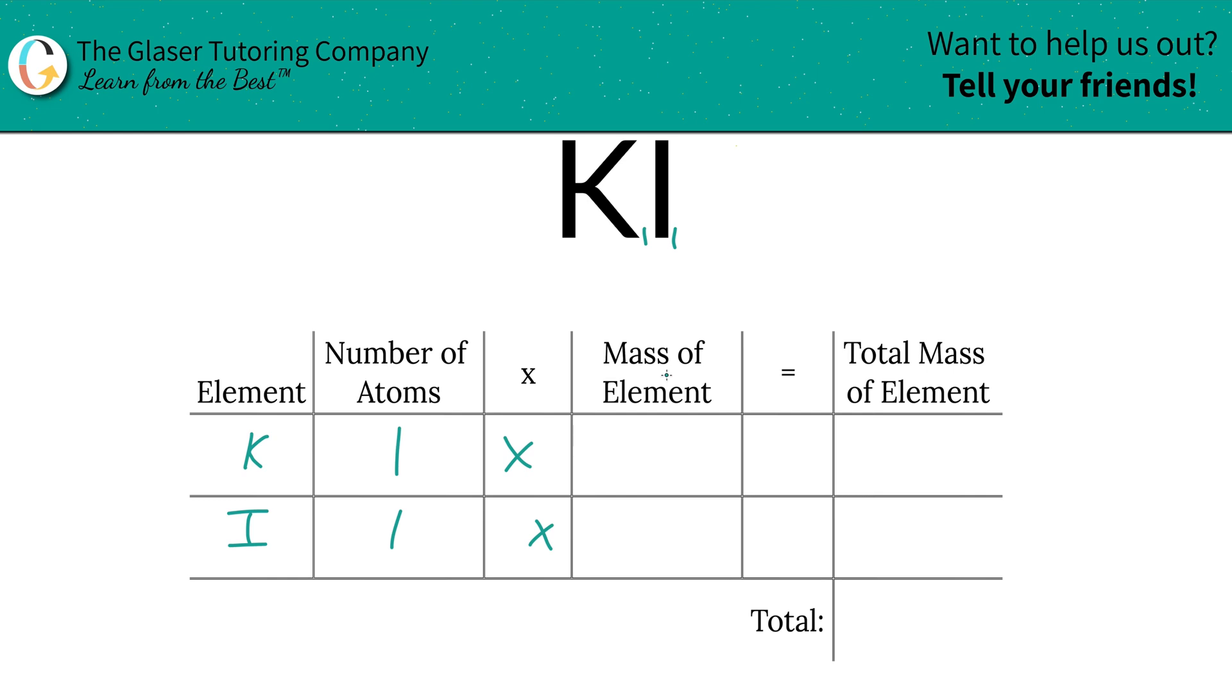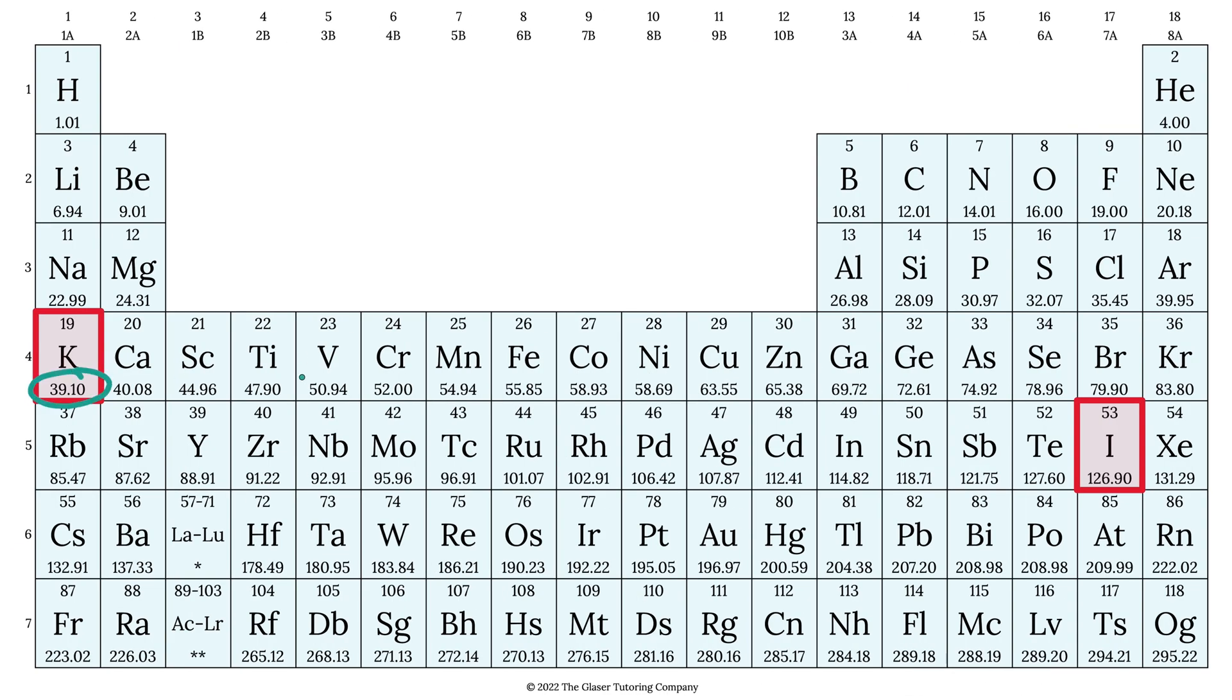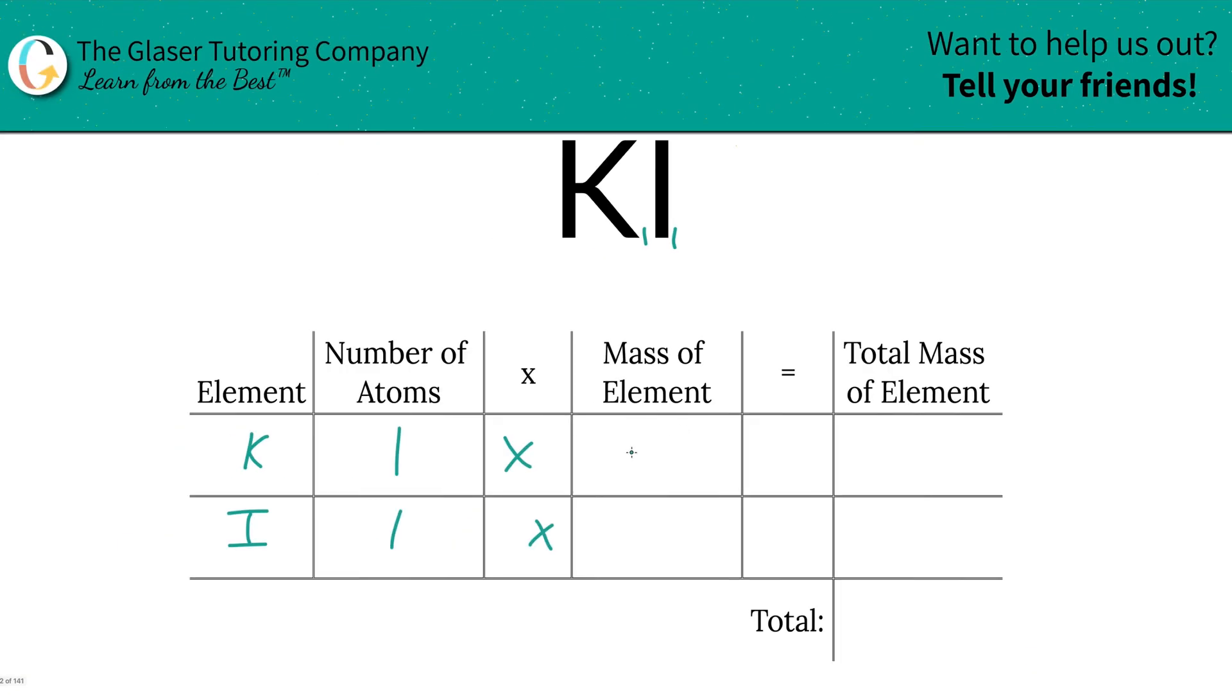multiply by the mass of each element. That's where the periodic table comes in, so let's take a look. Here's the mass of potassium: 39.1. Mass of iodine is 126.9. So let's write them down. We got